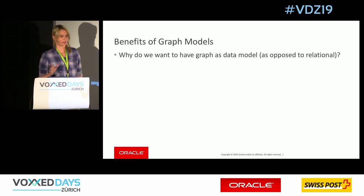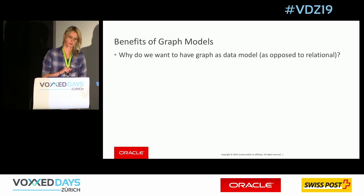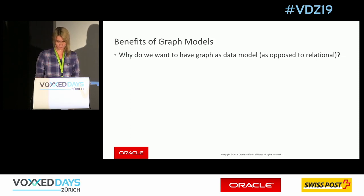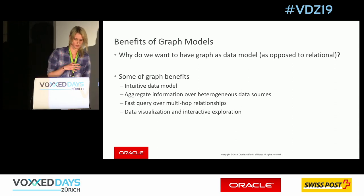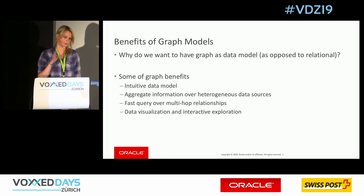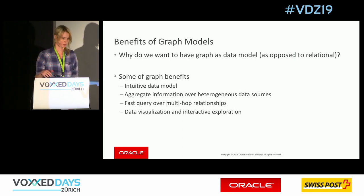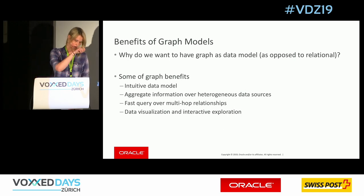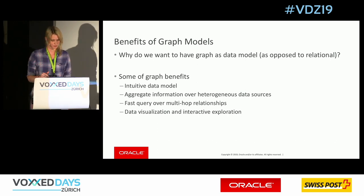So the first question is: why would we model our data as a graph instead of using tables? There are some benefits. First, graph can be an intuitive data model for some specific domains — for example, modeling data as a mind map where you have entities and draw relationships between them.